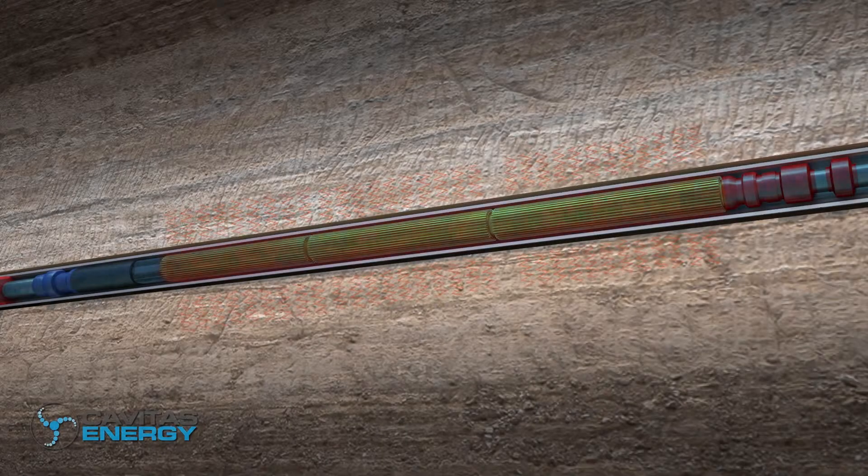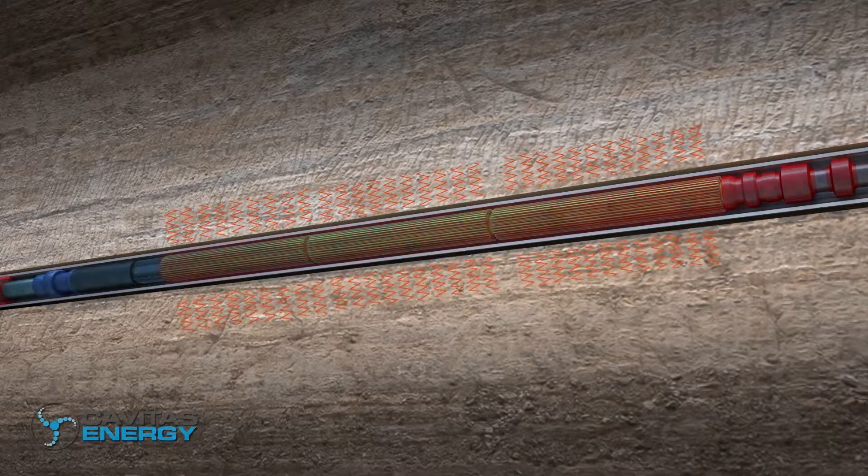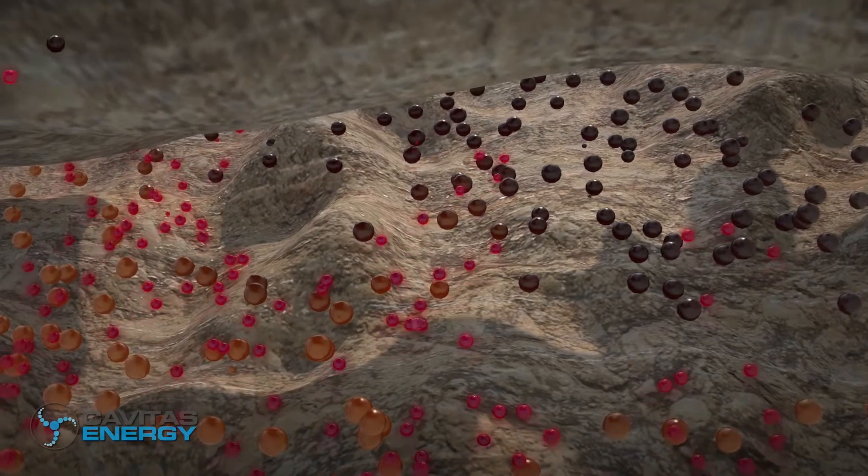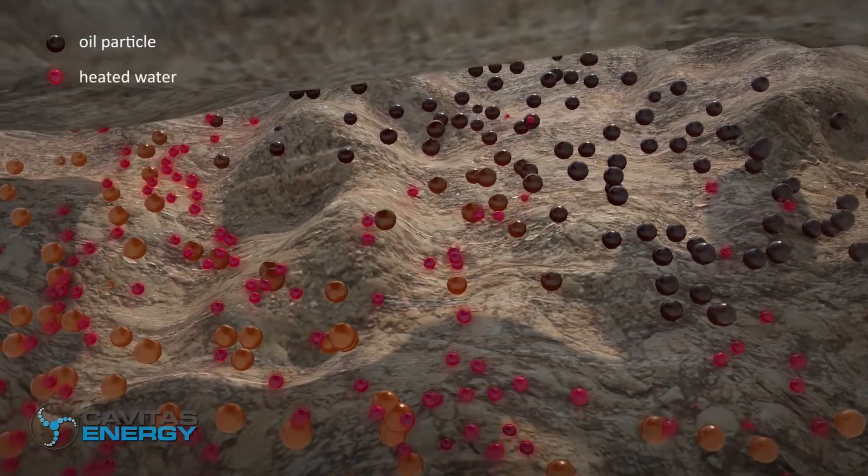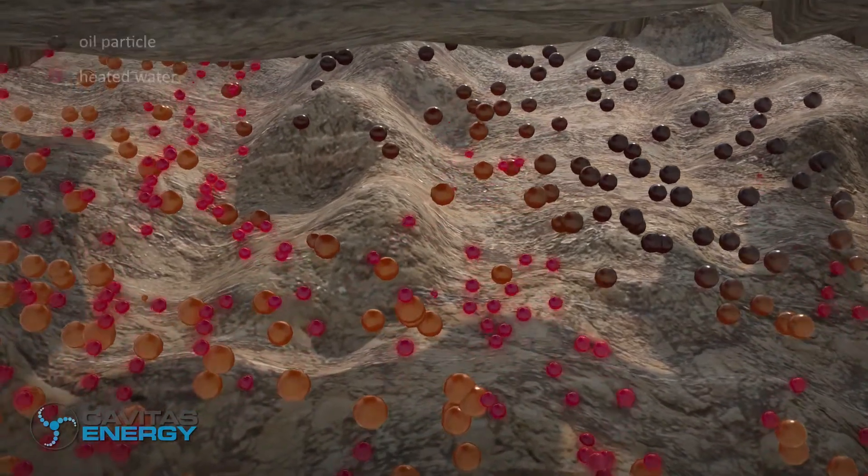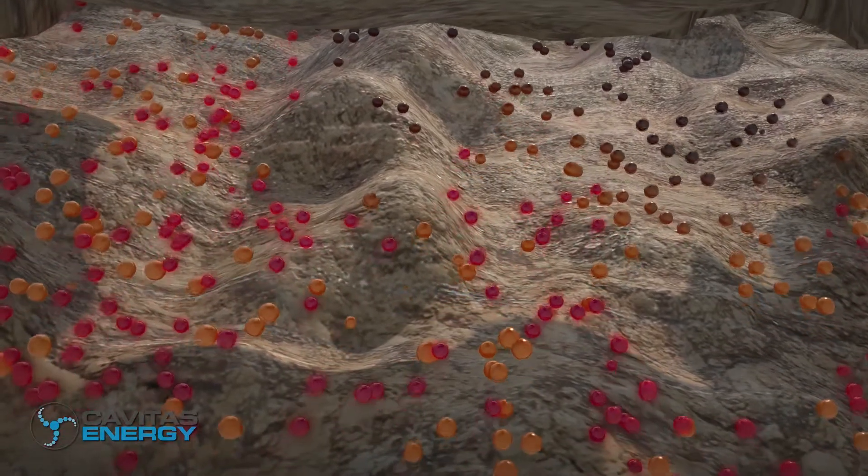In an injection well, THOR is a seamless part of the completion with rotational power provided by a downhole motor. Water injected into the well flows past THOR and is heated by thermal conduction to a target temperature before continuing into the reservoir as steam or hot water.